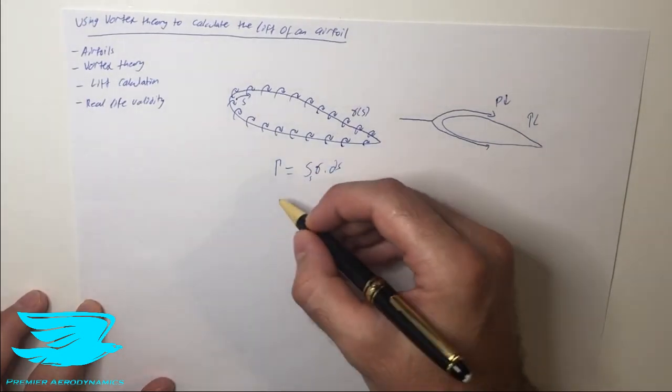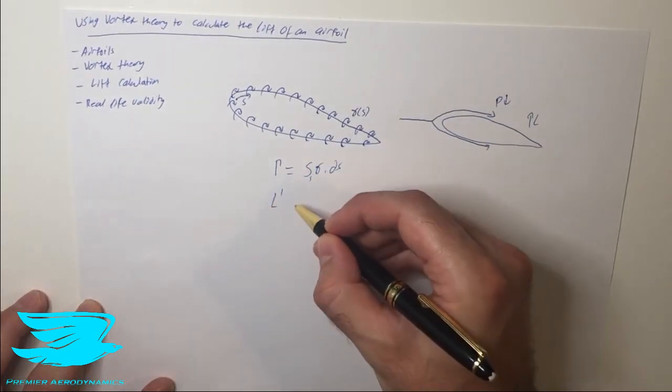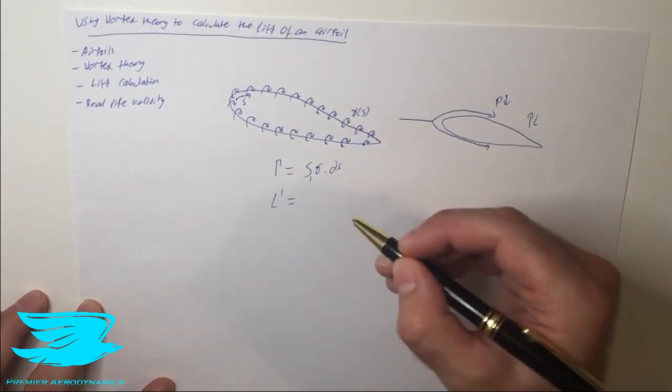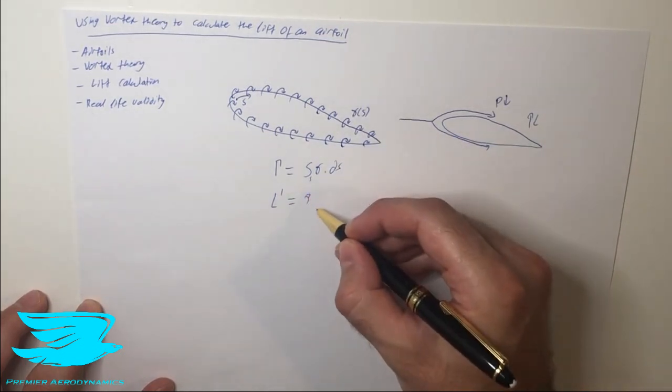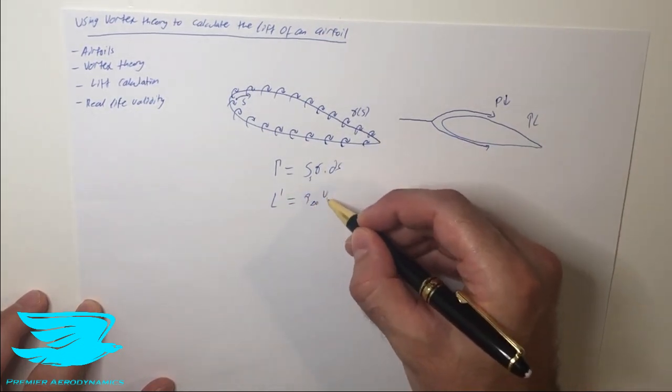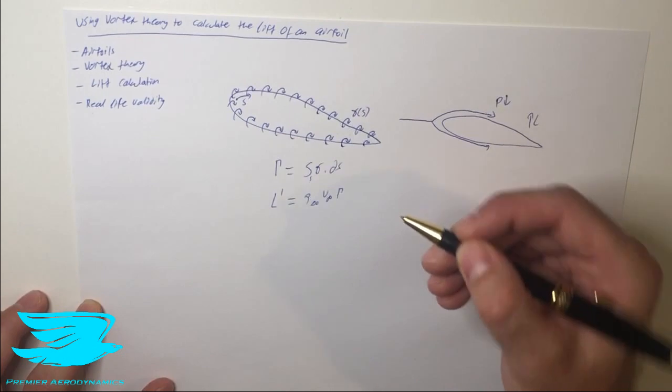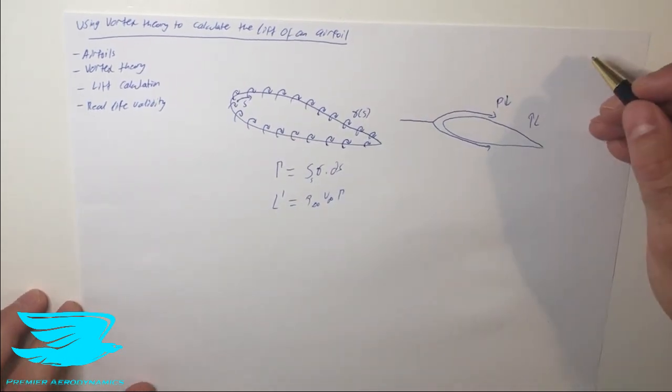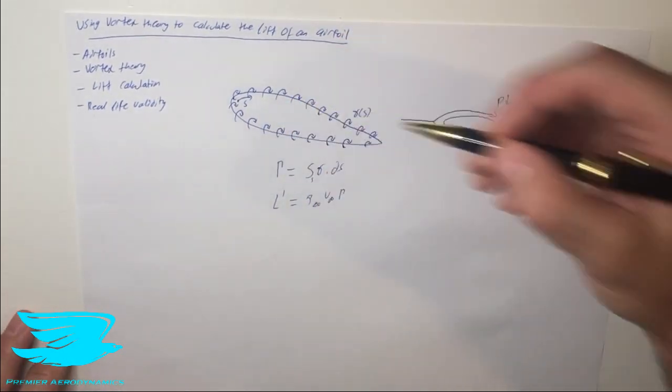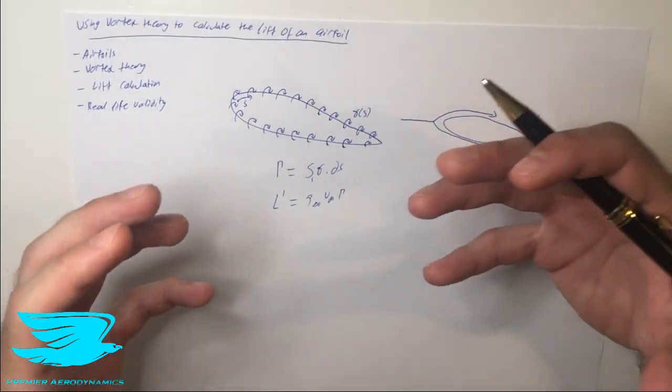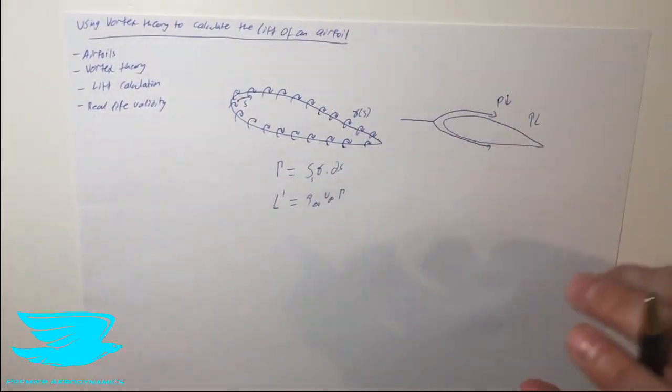And from that other video we now know that from the Kutta-Joukowski theorem that we can then calculate the lift per unit span as rho infinity v infinity gamma. So by knowing what the circulation is around this airfoil we can then calculate what the entire circulation is and then the lift of this airfoil.